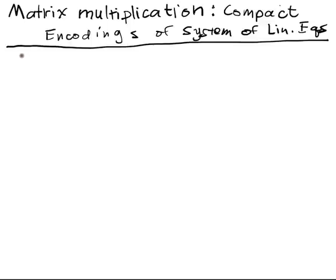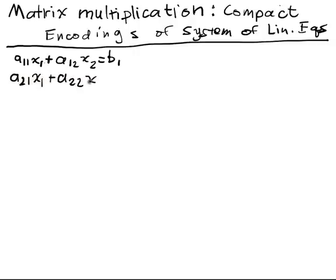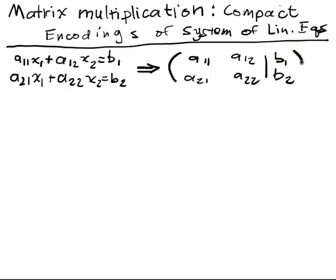We've already translated systems of linear equations into matrix equations. We've taken algebraic expressions — for the 2×2 system: a₂₁x₁ plus a₂₂x₂ equals b₂ — and translated this into the augmented system with entries a₁₁, a₁₂, a₂₁, a₂₂ and b₁, b₂. That allowed us to carry out our operations more efficiently.